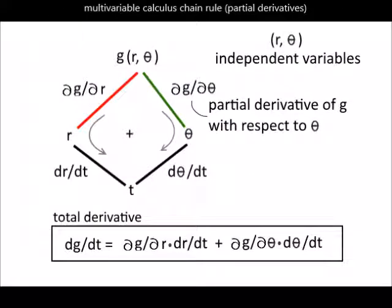We now need the multivariable calculus chain rule using partial derivatives. Consider a function g with two independent variables, say r and theta. We want to calculate the total derivative of g with respect to a single parameter, say t. The total derivative has two paths, red and green. The formula is shown at the bottom. Basically, it is the elementary calculus chain rule bumped up a notch to include the two independent variable paths for r and theta.